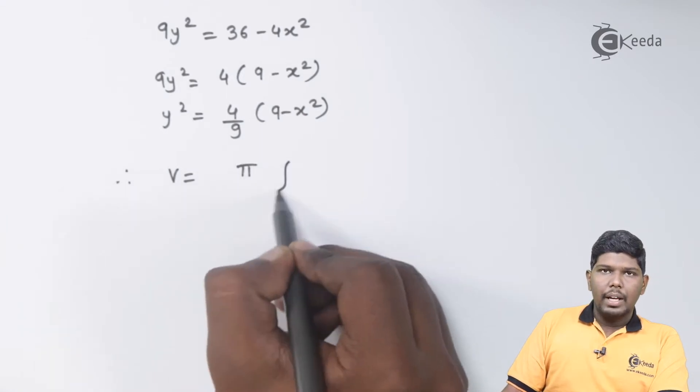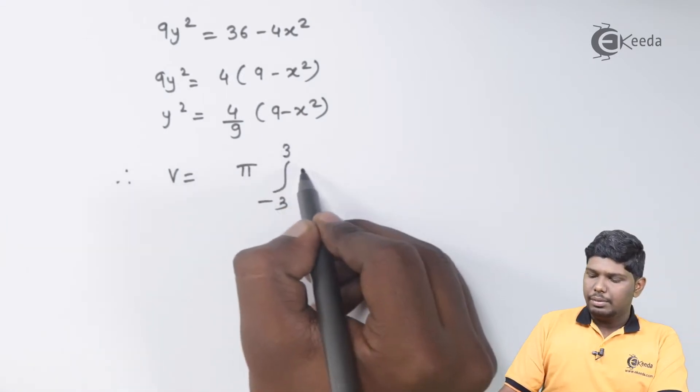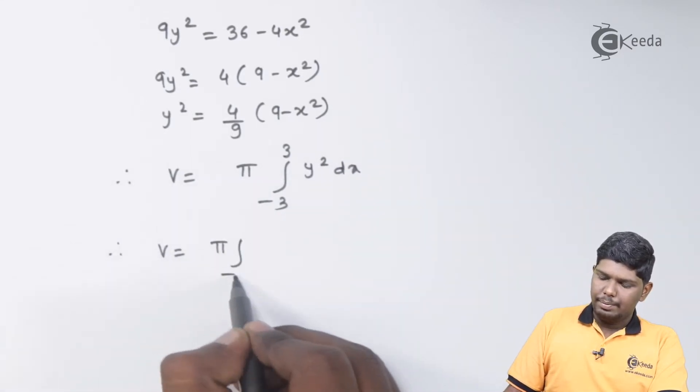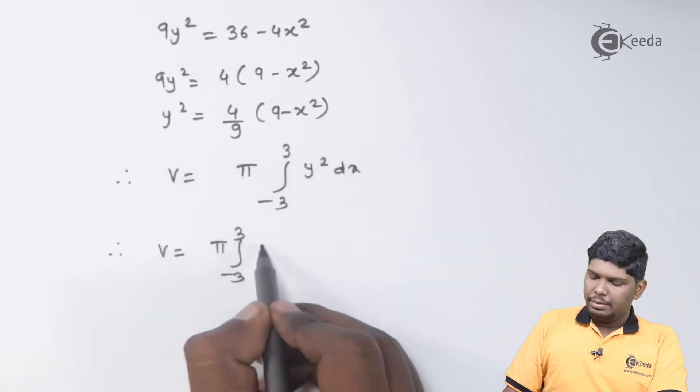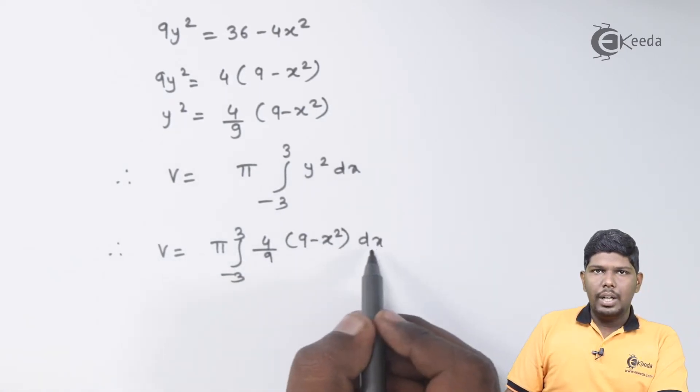Volume will be π times integral. The limits of x are minus 3 to 3, y² dx. Value of y² is (4/9)(9 - x²) dx.